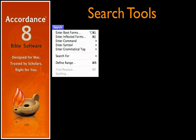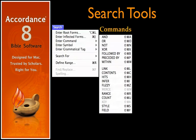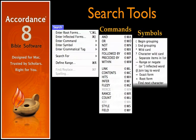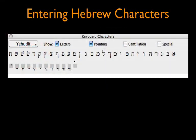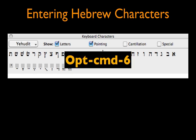Accordance's full array of search commands, search symbols, and grammatical tags are available for precise, fast searching of all of these resources. Accordance even includes a Hebrew character palette for typing Yehudit, our custom Hebrew font. Just type Option-Command-6 to display it.